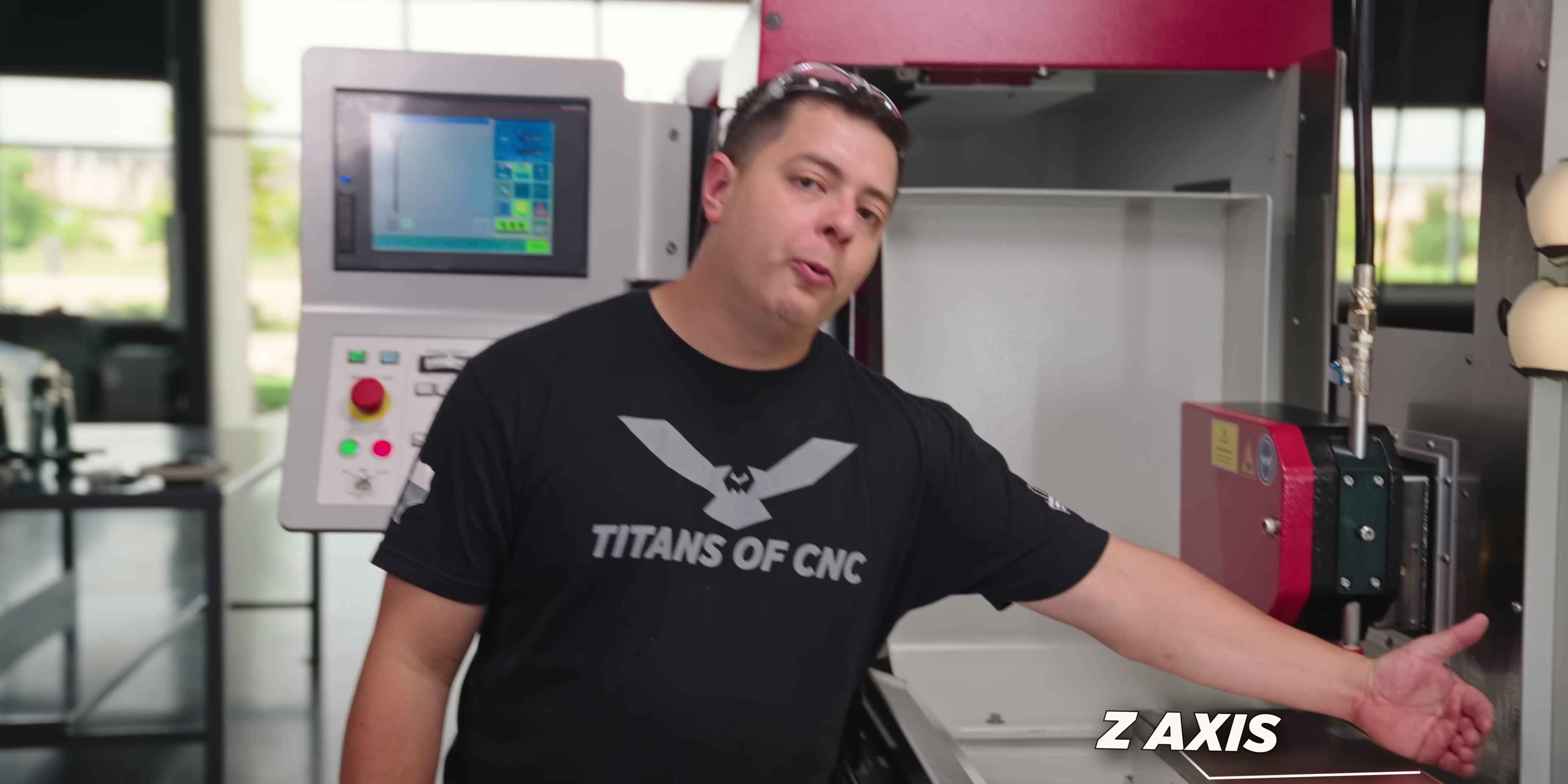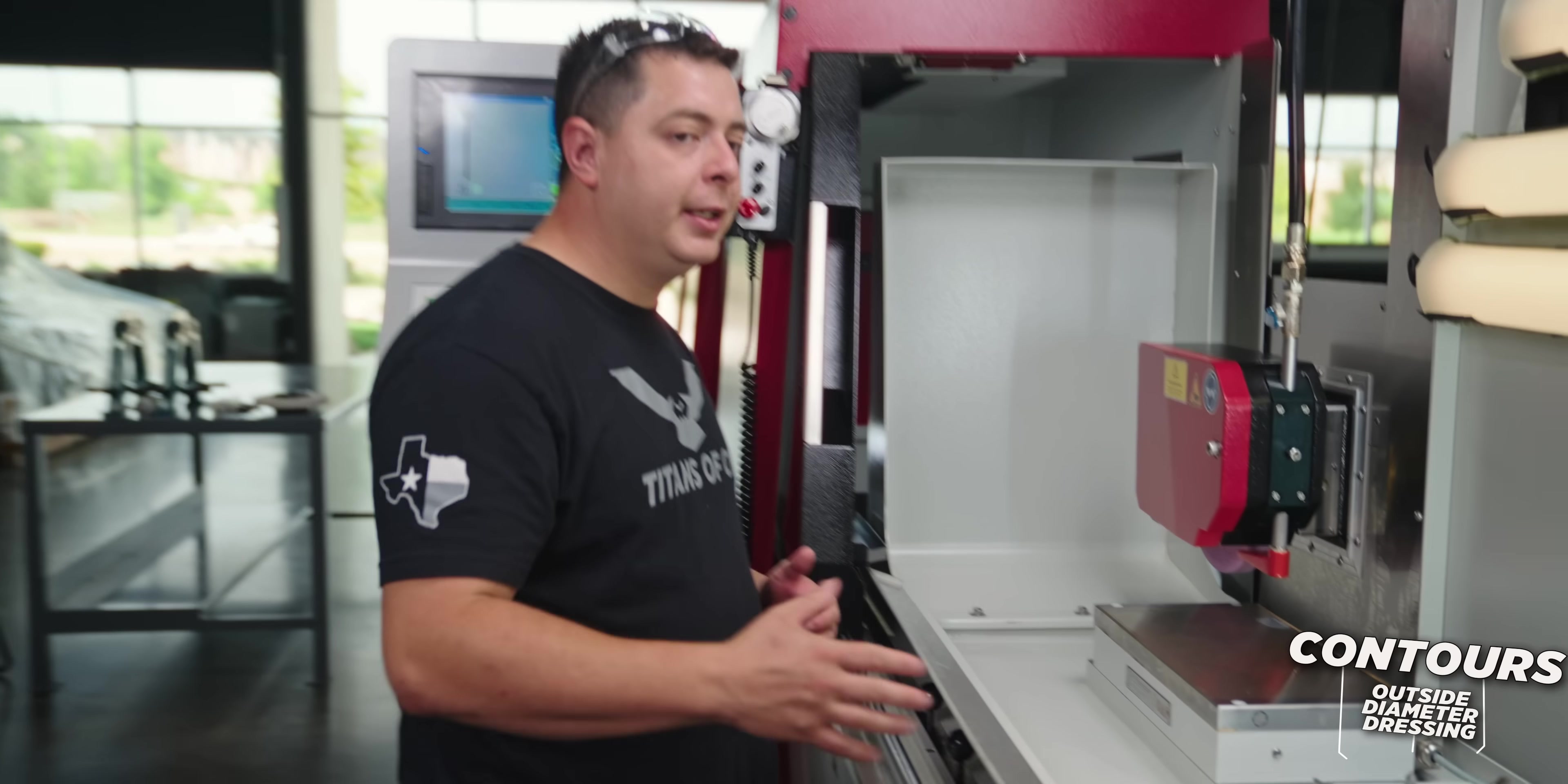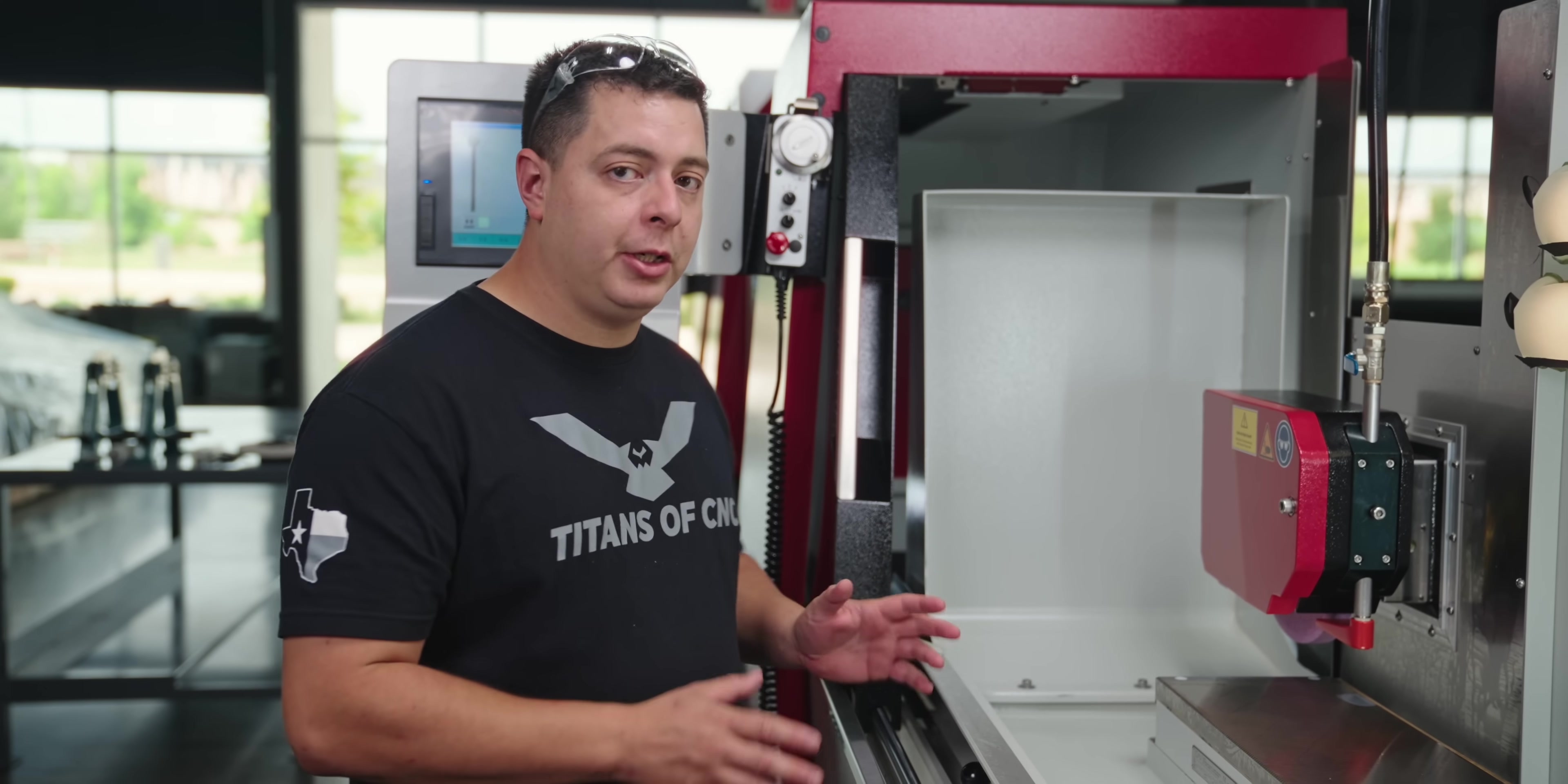On the right side we have three different diamonds. The middle diamond controls the outside diameter dressing, then the left and right diamonds put the contours on your grinding wheel such as radiuses and angles. On the left hand side you have your magnetic table where your work holding goes, then you have a 10 inch grinding wheel. All of that together is great for small accurate parts. That's what makes this machine great.